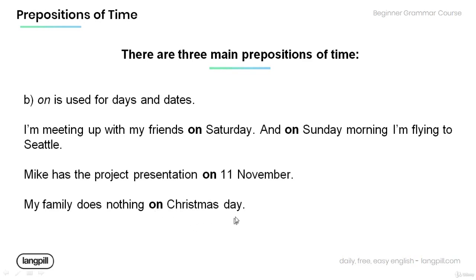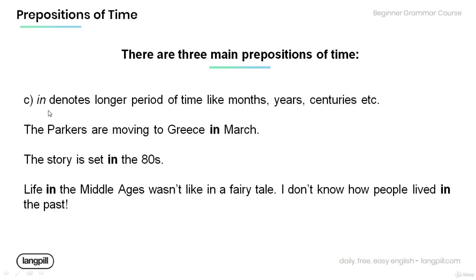In the sentence: My family does nothing on Christmas Day. The preposition of time 'on' is used for the date, Christmas Day. C: 'In.' 'In' denotes a longer period of time, like months, years, centuries, etc. Have a look at the examples below: The Parkers are moving to Greece in March. The preposition of time 'in' is used to denote the month, March.